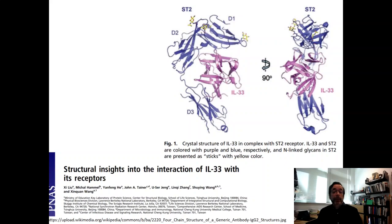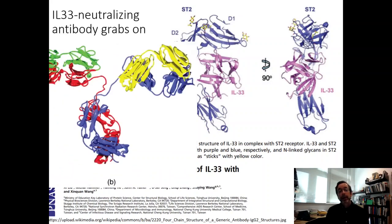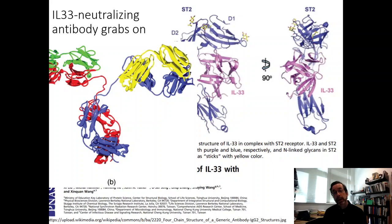We can even see IL-33 binding to its receptor. The purple molecule is IL-33, and its receptor forms a sort of C-shaped claw that grabs around the IL-33. If you can make another protein that binds IL-33 and pulls it away — for example, getting the adaptive immune system to make antibodies that grab onto the IL-33 — then the receptor can't grab onto it, and you don't get the rash and itch. That's exactly what an IL-33 neutralizing antibody does: it's a protein that binds the offending antigen.